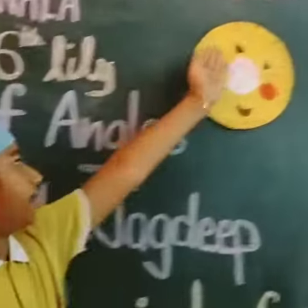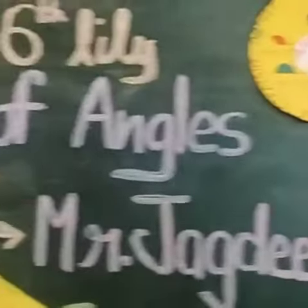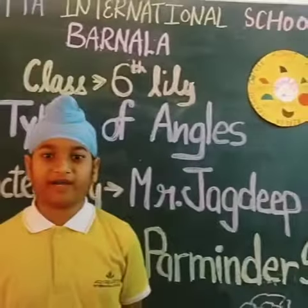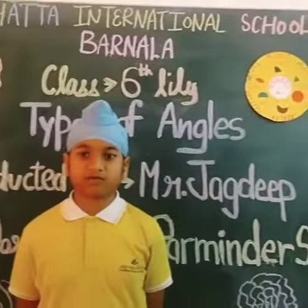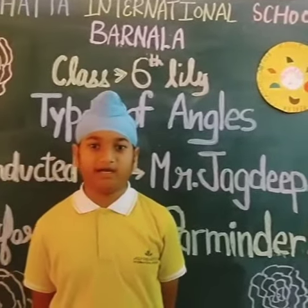Number 2: right angle. The angle of 90 degrees is called a right angle.